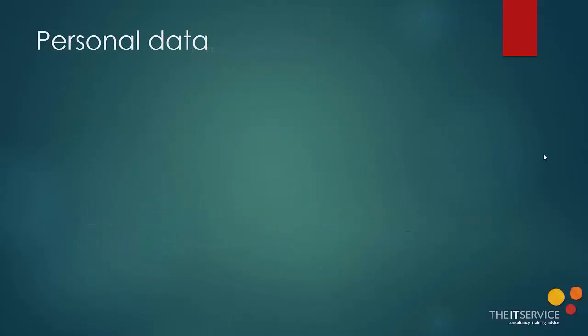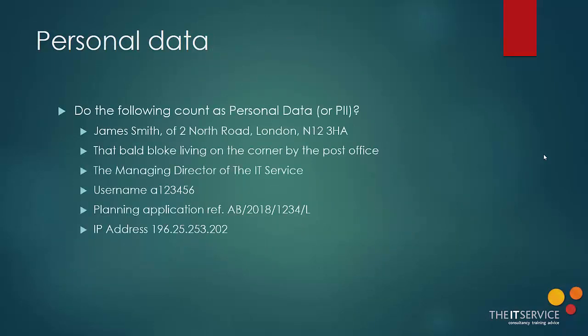Let's take a look at some examples of personal data. Would each of the following count as personal data, or PII — the American term, which is personally identifiable information? The first one is nice and clear: James Smith of 2 North Road, London, N12 3HA. Well, clearly that's identifiable — it identifies Mr Smith.